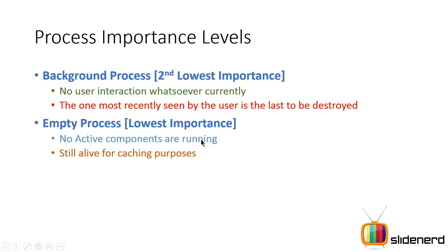Then there is the empty process, which means no components are currently present inside it. It is merely running for caching — for example, you start a process, the activity executes, but you keep the process alive assuming the user will come back and start the activity again, to avoid recreating the entire thing. This is the empty process with the lowest importance. When memory runs out, the empty process is terminated first, followed by background processes.